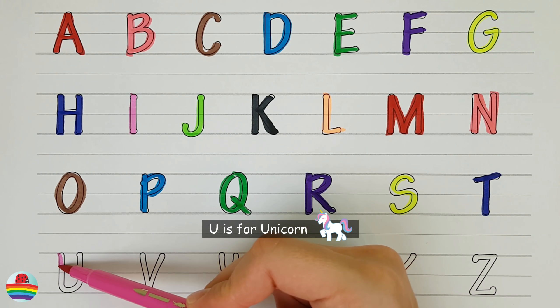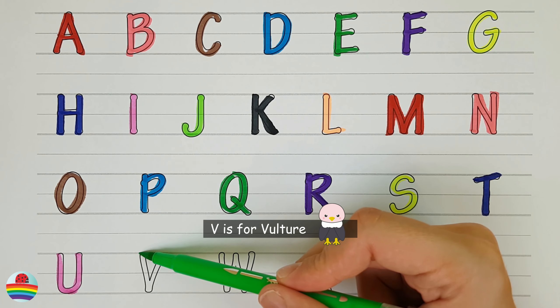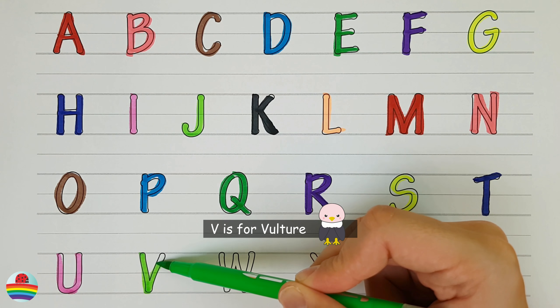U. U. U is for Unicorn. U. V. V is for vulture. V.